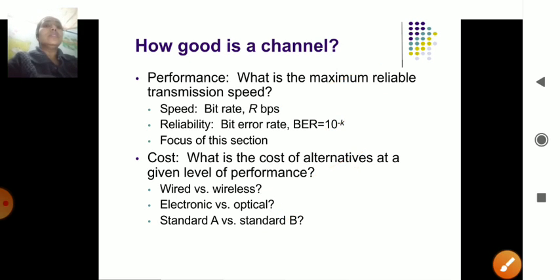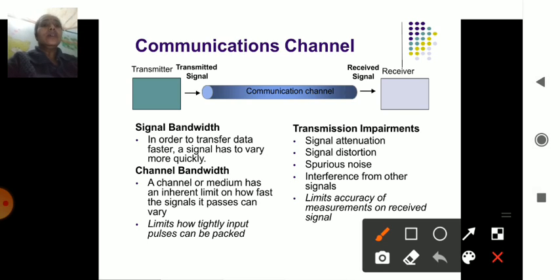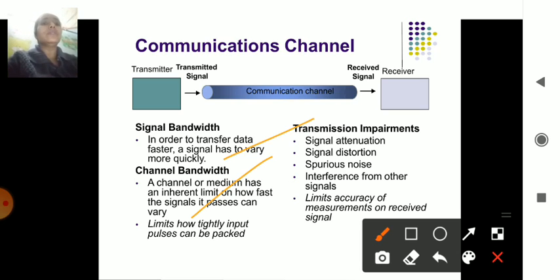In this session we will learn about frequency domain channel characterization. First, we should know what a communication channel consists of. It depends on various factors. Signal bandwidth is nothing but the range of frequency over which a signal is provided — whether a higher or lower signal passes at a faster or lower rate. Channel bandwidth refers to how much bandwidth of data is transferred over the medium, with a limit such as 100 KB, 200 KB, or 300 KB.